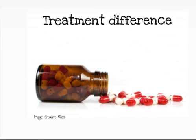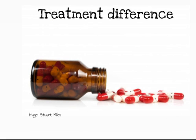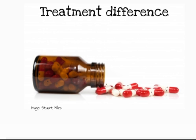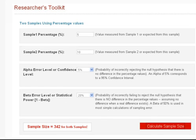Number 3 is the treatment difference, which is our guess of how effective the treatment will be. For example, we guessed that the infection rate for silver dressings will be 5%, and for standard dressings 10%. The treatment difference can be the hardest number to estimate, because if we knew it, there would be no need for the study. We can plug these numbers into an online sample size calculator.